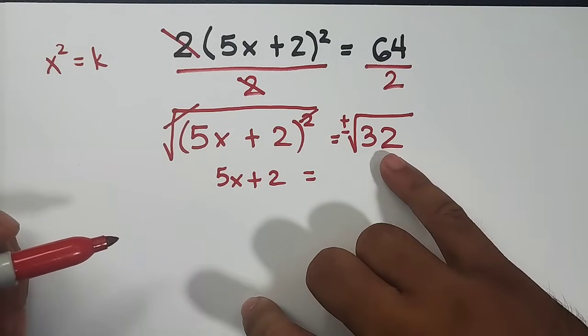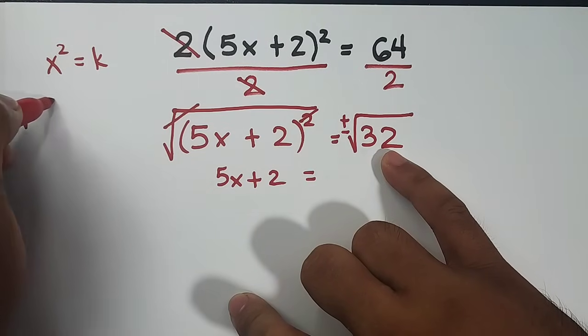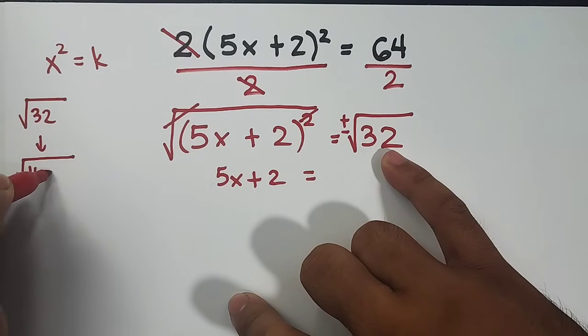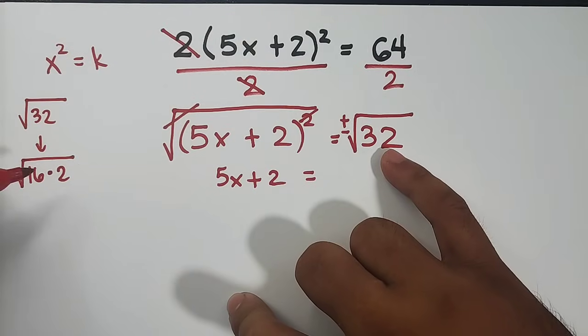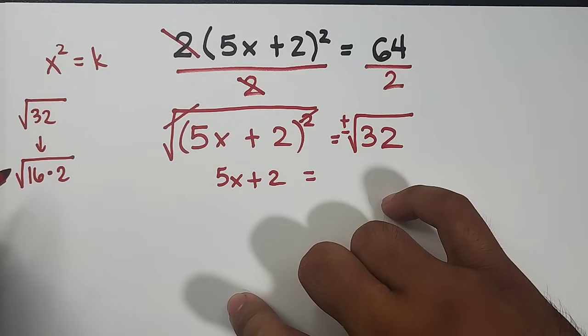Okay, 32 can be factored out as 16 times 2, right? So we have here, 32, square root of 32 is equal to the square root of 16 times 2. Remember, if the number is not a perfect square, try to think if it's factorable with a perfect square number. Let's continue.